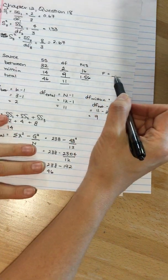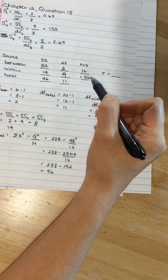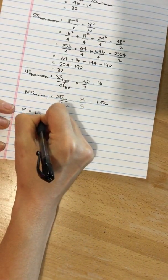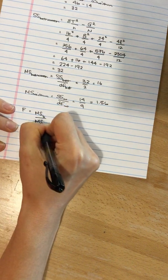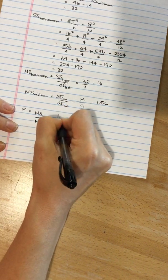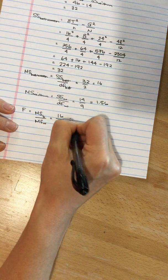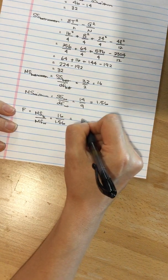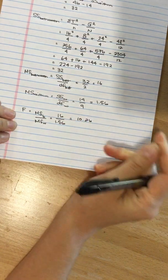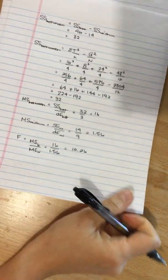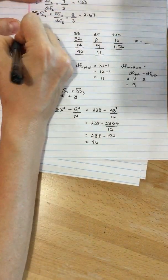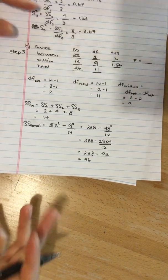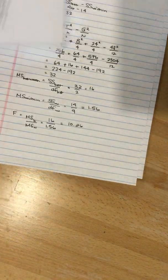Now we're going to calculate our F, which is the mean square between divided by the mean square within. So that's 16 divided by 1.56, which is equal to 10.26. All of this is step 3 of the hypothesis testing procedure. I forgot to do the other pieces, so I'm going to go back and do them now.